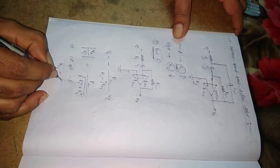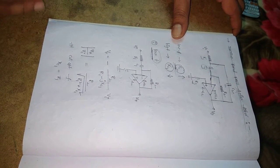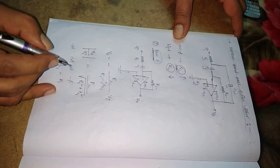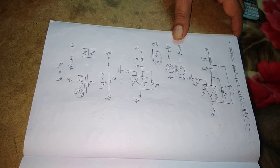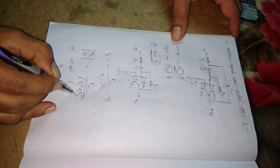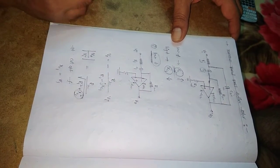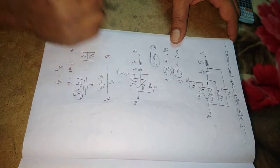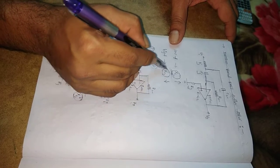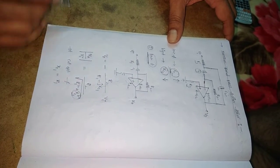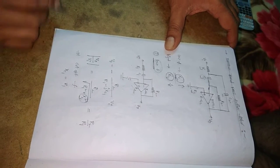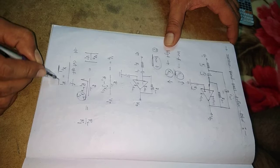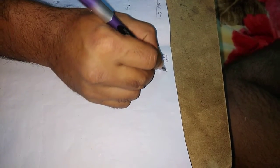For low frequency signals, since we select C1 as a very small value, X_C1 is small and can be neglected. When X_C1 is neglected, the voltage gain becomes R2/R1. At the cutoff frequency, X_C1 equals R1. So whether we are at the passband or at the cutoff frequency, the gain is determined by R2/R1.